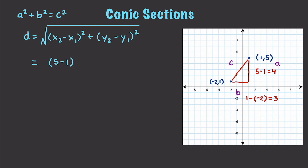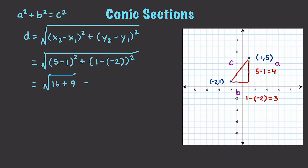So it's going to be (5 - 1)² + (1 - (-2))², and then we'll find that square root, which is going to end up being 16 + 9, which of course is going to be equal to the square root of 25, or simply 5. You're also going to be able to find the midpoint of these two points.